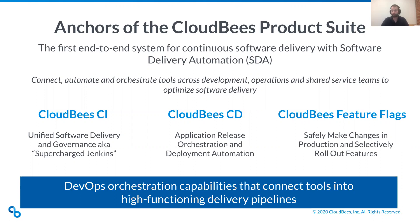Secondly, we're going to be talking about CloudBees CD, formerly known as Electric Cloud's Flow. It's an application orchestration tool focused on release. It really focuses on building bodies of evidence for you and your approvers to evaluate, then having very clear reasons to promote between environments, a very clear audit trail, and the ability to ensure you're always compliant with things like NIST, RMF, FIPS, and FISMA.